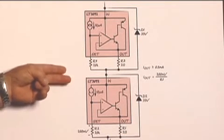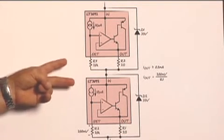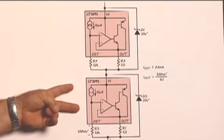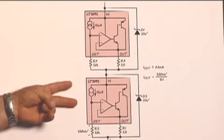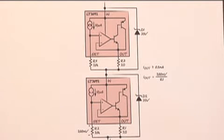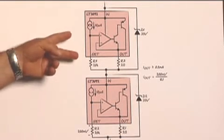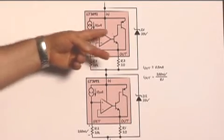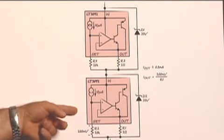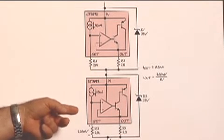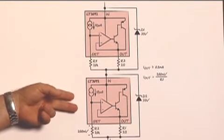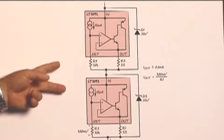The way this works is both LT3092s are set to the same current, one will be marginally higher than the other and that will collapse down to its minimum operating voltage about one and a half volts, the other one will be absorbing all of the voltage as the voltage increases. As we get up toward the Zener voltage, the Zener will shunt current around the LT3092 and start bringing up the voltage on the second device, and the second device will regulate the current as we go up toward the total voltage across the two LT3092s.